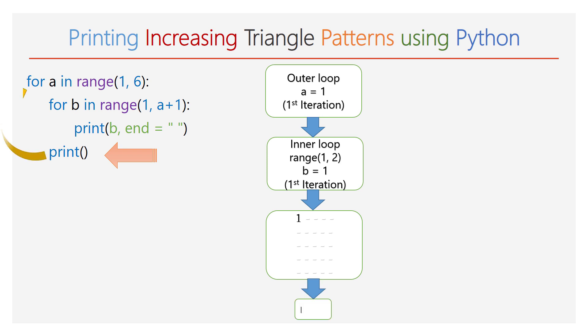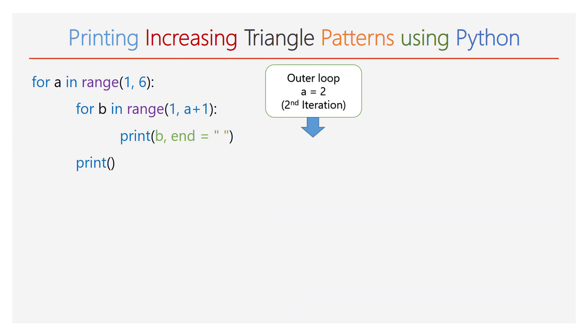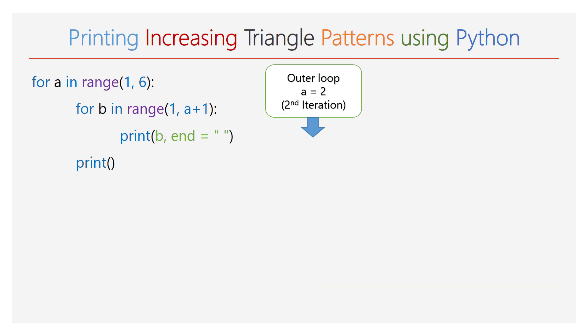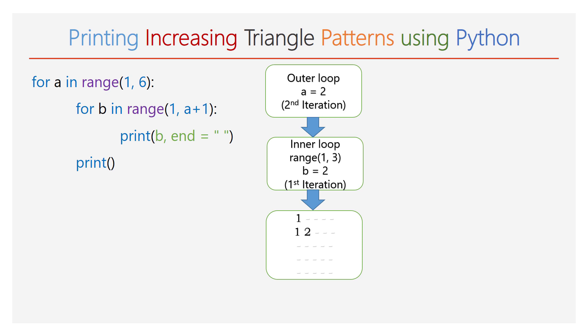Again, the execution goes to the first line and the value of a will be 2. The range of b will be 1 to 3, so the inner for loop will iterate 2 times. During the first iteration, the value of b will be 1, so you will observe 1 in the second line. During the second iteration, the value of b will be 2, so you can see 2 in the second line. Next, the empty print function is executed and the cursor will take a new line.